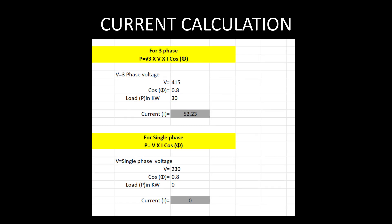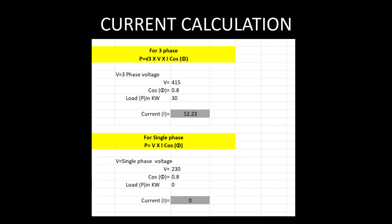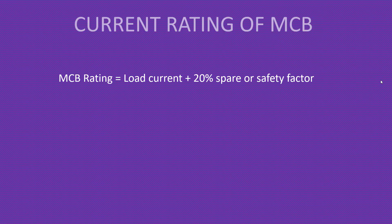For a single-phase scenario, the power equation is P = V × I × cosφ. We assume a power factor of 0.8 and a standard single-phase voltage of 230 volts. For a load of 2 kilowatt, the load current for single-phase equals 10.86 ampere. The MCB current rating equation is: MCB current rating = load current × 1.2, keeping 20% spare breaker capacity as a safety factor per IEC.